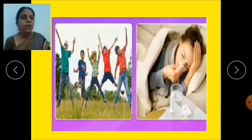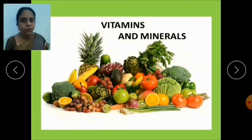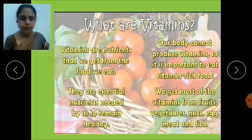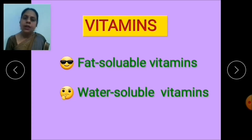Next are vitamins and minerals, which are necessary for the proper functioning of the human body and are found in fresh foods and vegetables. Vitamins are nutrients which keep us fit and healthy, free of diseases. Our body cannot produce vitamins, so it is important to eat vitamin-rich food. We get most vitamins from fruits, vegetables, nuts, eggs, meat, and fish. There are two types of vitamins: fat-soluble vitamins and water-soluble vitamins.